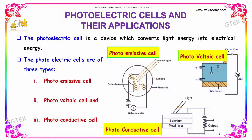The photoelectric cell is a device which converts light energy into electrical energy. You are able to see the light energy and its conversion. There are three varieties of cells available.